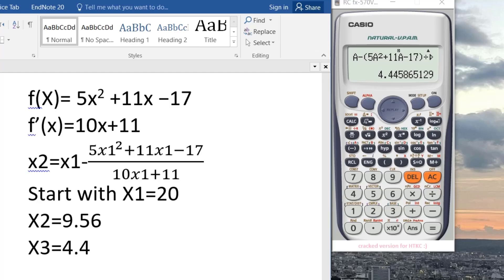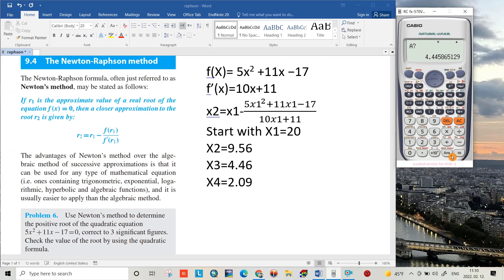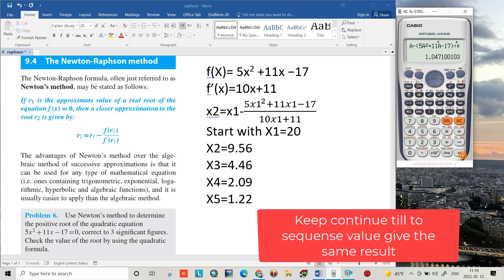This time click equal, it calculates directly using answer. This time 2.08, so x4 = 2.09. This time also equal, answer 1.22, just equal, answer 1.05.